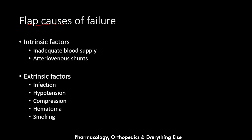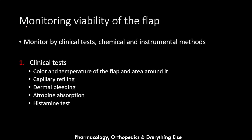Flaps can also fail due to intrinsic and extrinsic causes. Intrinsic causes include inadequate blood supply to the flap or arteriovenous shunting, both resulting in insufficient blood reaching the flap and flap death. Extrinsic causes include infection leading to tissue damage, hypotension decreasing blood supply, compression, hematoma, and smoking, which can cause arterial sclerosis and lead to flap failure.